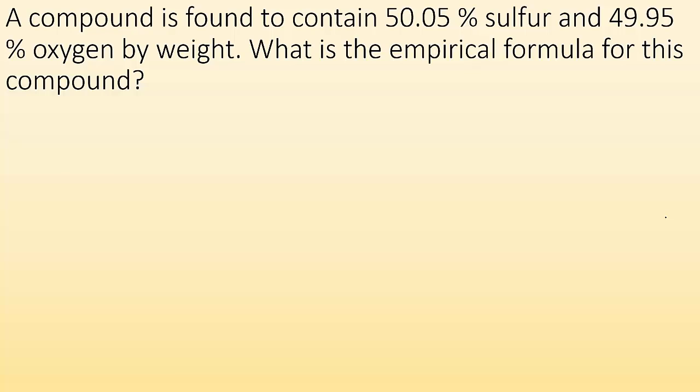Alright, so an example. A compound is found to contain 50.05% sulfur and 49.95% oxygen by weight. What is the empirical formula for this compound? So let's remember our steps. Assume we got 100 grams, the percentages become the grams, and then we've got to convert grams to moles and then divide by the smallest number.